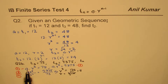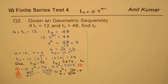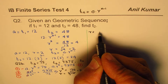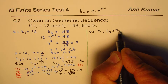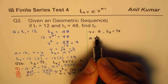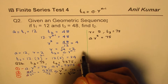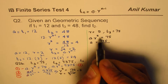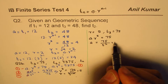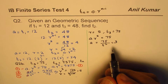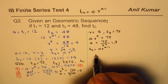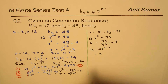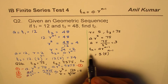Once we have r equals 5, we can find 'a'. Using t3 equals 75: a times r squared equals 75, so a times 25 equals 75, giving a equals 75 divided by 25, which is 3. Therefore the general term tn equals a times r to the power of n minus 1, which is 3 times 5 to the power of n minus 1.